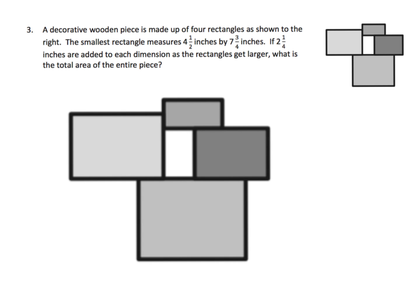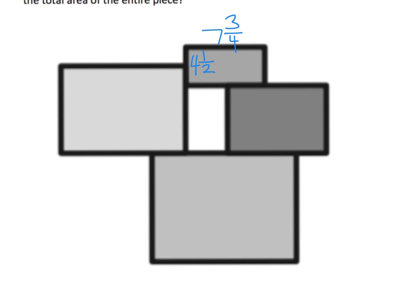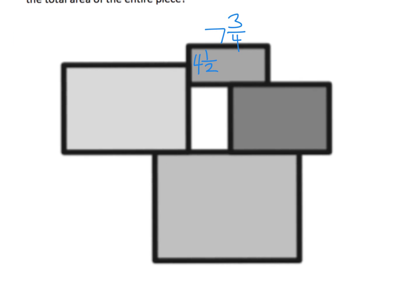The first thing we're going to do is write in that the smallest rectangle is four and a half by seven and three-quarters. Now we know that each dimension gets larger by adding two and a quarter. This is where, parents and teachers, if you've been doing number talks with fractions — especially adding halves and quarters — that's really a good idea, because we want students to be able to add halves and quarters in their head. So we add four and a half plus two and a quarter, which gives us six and three-quarters.